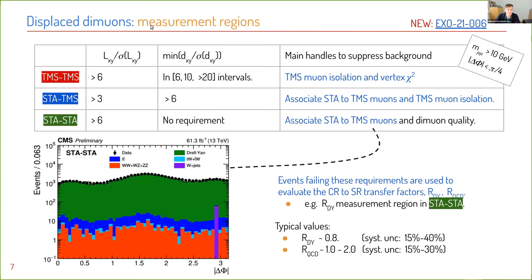We define signal regions in terms of displacement for each category by placing cuts on LXY and DXY significance. For TMS muon categories, we use isolation; for STA muon categories, we match STA muons to TMS muons to suppress backgrounds. We define measurement regions that are signal-depleted by inverting these cuts. This is the Drell-Yan measurement where we evaluate transfer factors; typical values are close to unity for Drell-Yan and vary between 1 to 2 for QCD depending on mass. With transfer factors in hand, we make background predictions and validate them in validation regions, showing good closure.